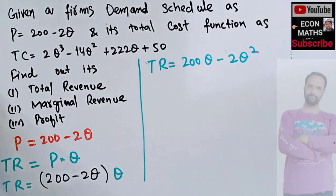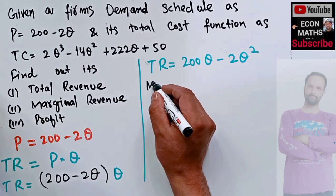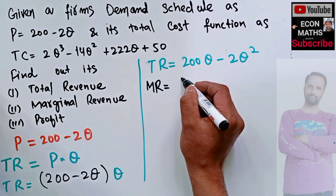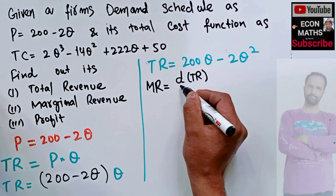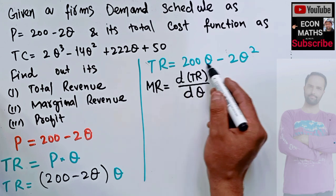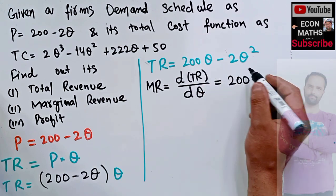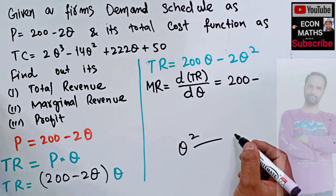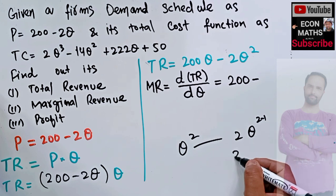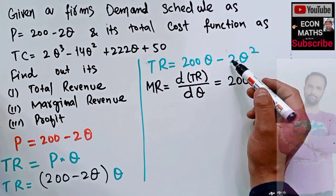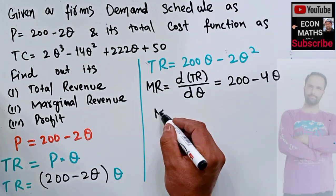Next is to find out the marginal revenue. Marginal revenue is the addition to total revenue when an extra unit of output is produced, so marginal revenue is the derivative of the total revenue function with respect to output. Using the power function rule — where the derivative of q to the power n is n times q to the power n minus 1 — the derivative of 200q is 200, and the derivative of 2q squared is 4q. So our marginal revenue comes out to be 200 minus 4q.